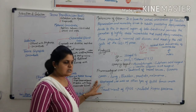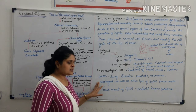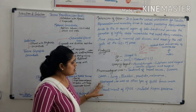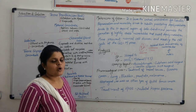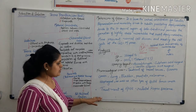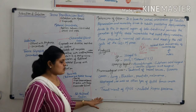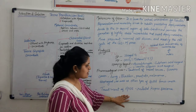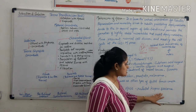Paclitaxel is used in the treatment of breast cancer, ovarian cancer, lung cancer, bladder cancer, prostate cancer, esophageal cancer, and melanoma. It is also used in all types of solid tumors. It is also used in the treatment of AIDS-related Kaposi's sarcoma.